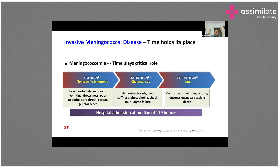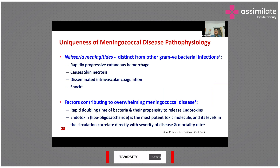Hospitalization occurred at a median of 19 hours after onset of symptoms, ranging from 13 hours in children less than one year to 22 hours in the 15 to 16 year age group, illustrating how quickly a response is required. Meningococcal disease has unique pathological features distinct from other gram-negative bacteria, including rapidly progressive cutaneous hemorrhage and skin necrosis, disease associated with disseminated intravascular coagulation (DIC) and shock. Contributing factors include the rapid doubling time of the bacteria and their propensity to release endotoxin — primarily lipopolysaccharide — which is the most potent toxic molecule, and its level in the circulation correlates directly with disease severity and mortality.